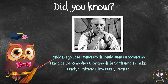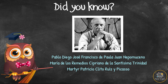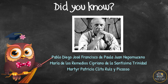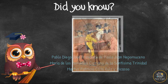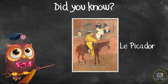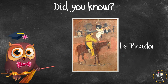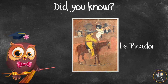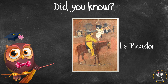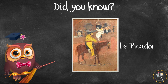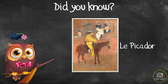Did you know Picasso was named after various saints and relatives, and his full name was actually 23 words long? Picasso produced his first painting at only nine years old. It's called Le Picador and shows a man on a horse during a bullfight.